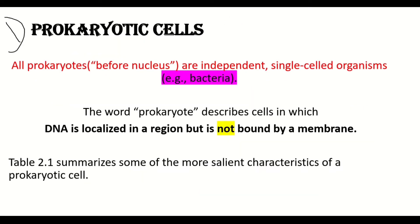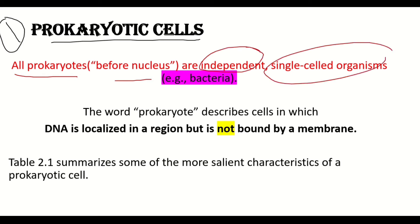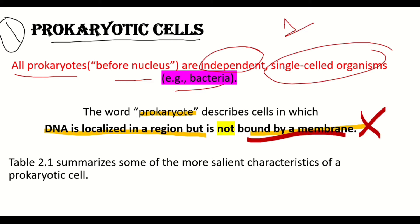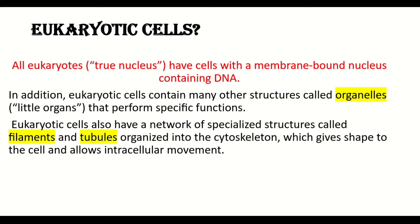The term prokaryotic cells contains two words: 'pro' and 'karyotic.' All prokaryotes — meaning 'before nucleus' — are independent and single-celled organisms. For example, bacteria have a single cell. The word prokaryotic describes cells in which DNA is localized in a region but is not bound by a membrane — there is no membrane. More detail can be seen in table 2.1.